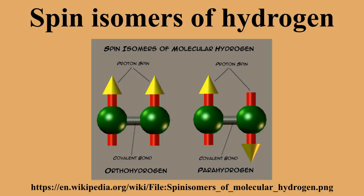Molecular oxygen, O2, also exists in three low-energy triplet states and one singlet state — as ground-state paramagnetic triplet oxygen and energized, highly reactive diamagnetic singlet oxygen. These states arise from the spins of their unpaired electrons, not the protons and nuclei.